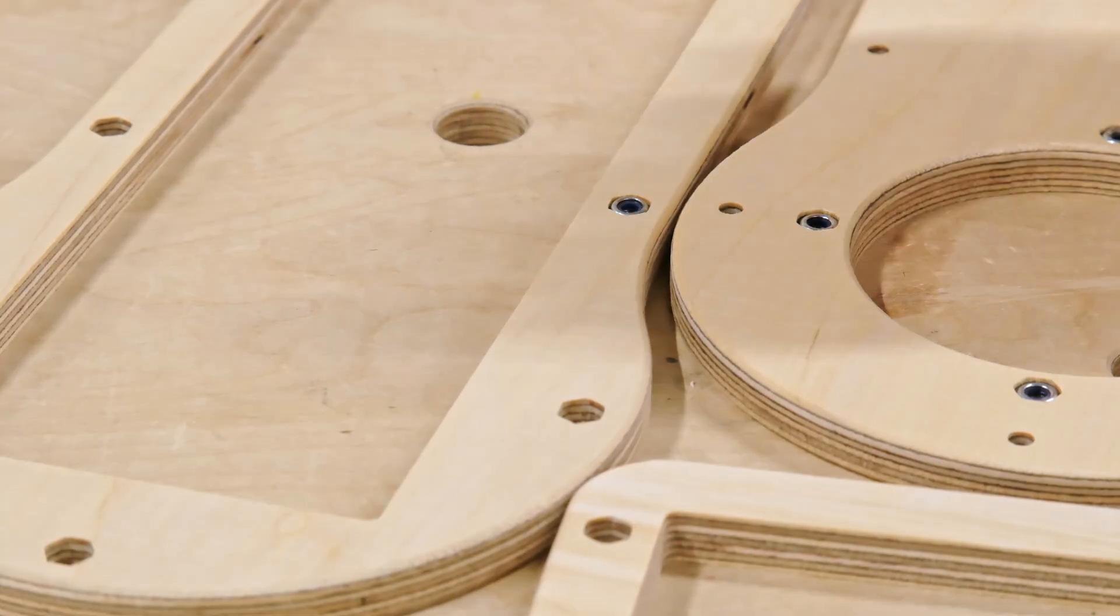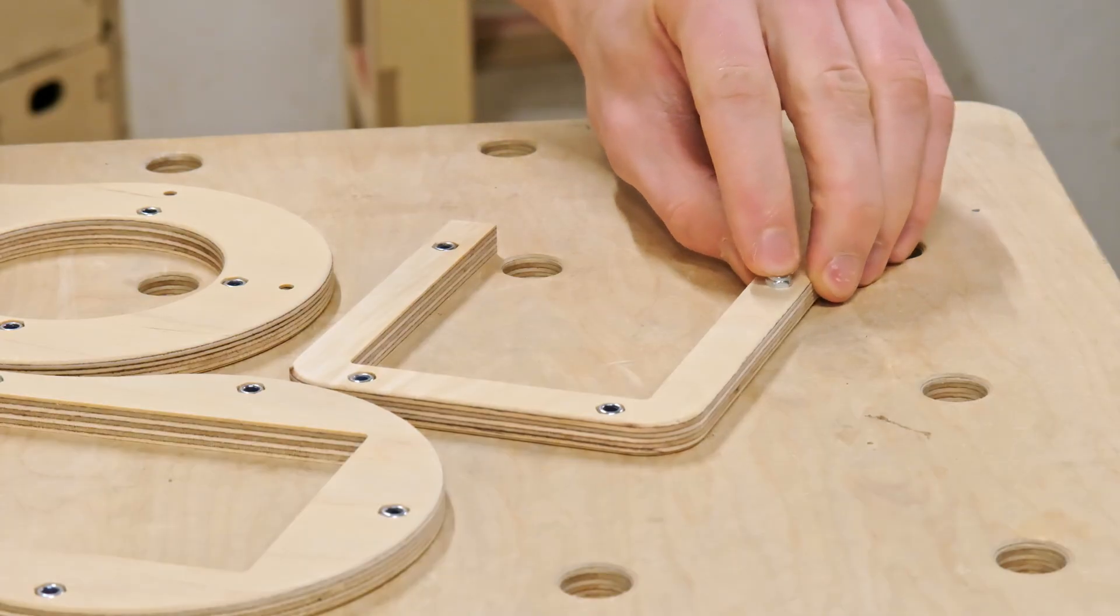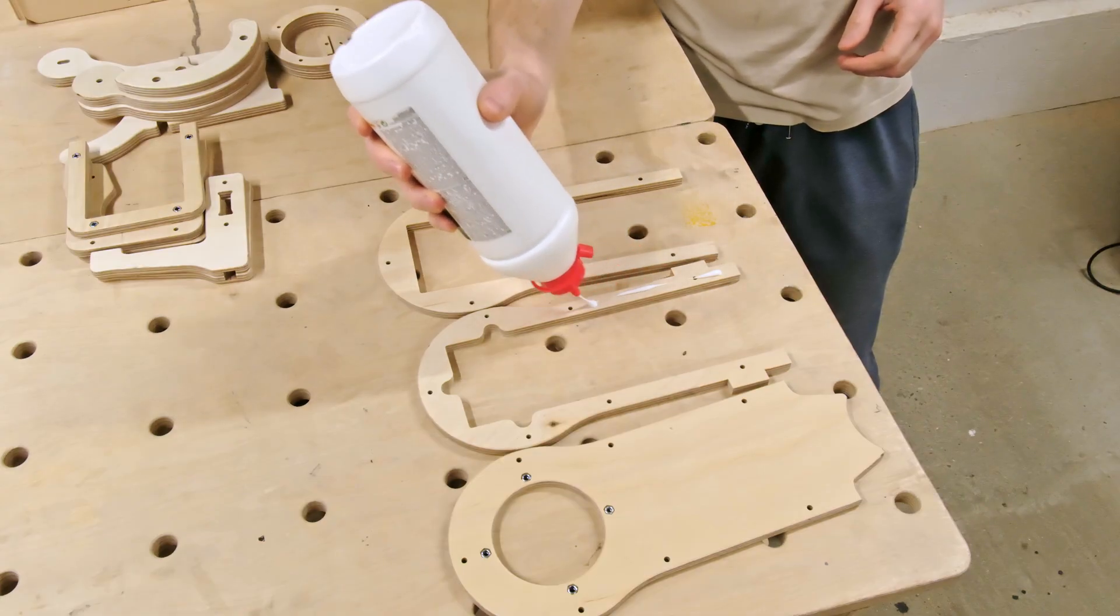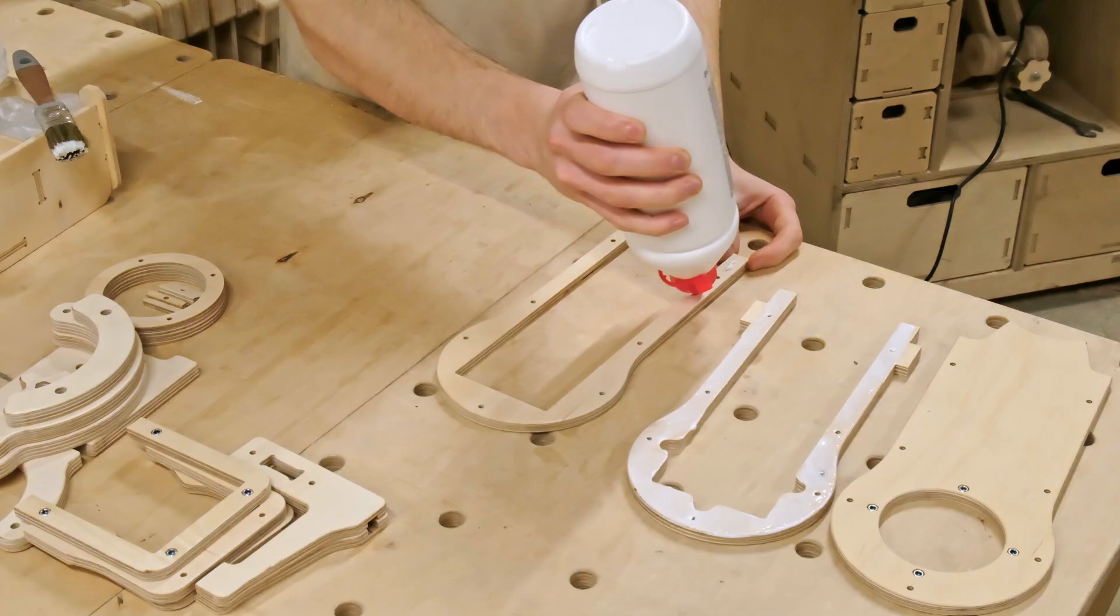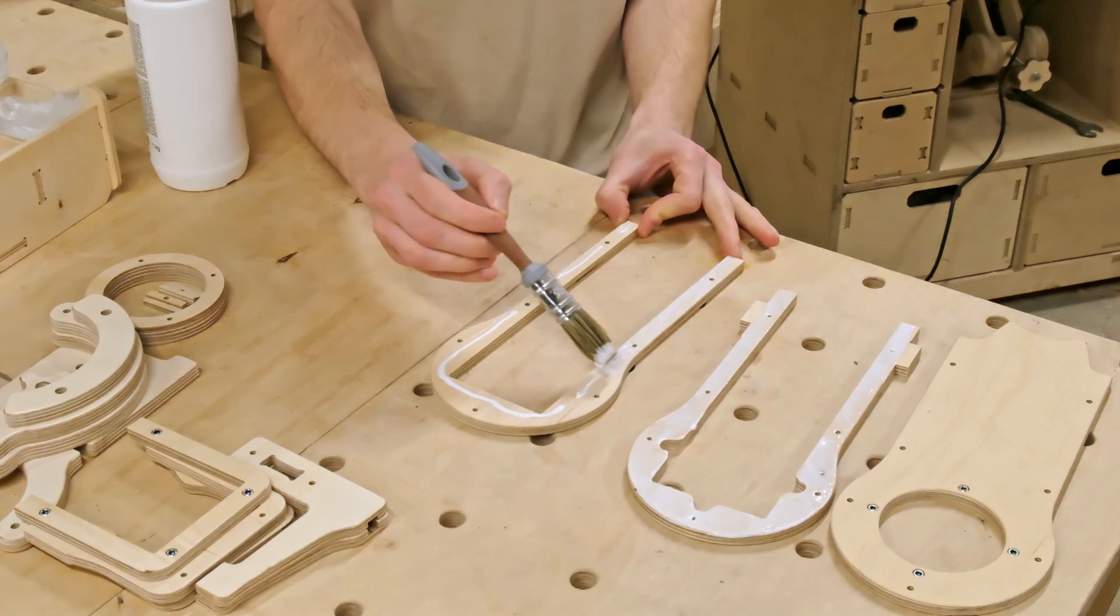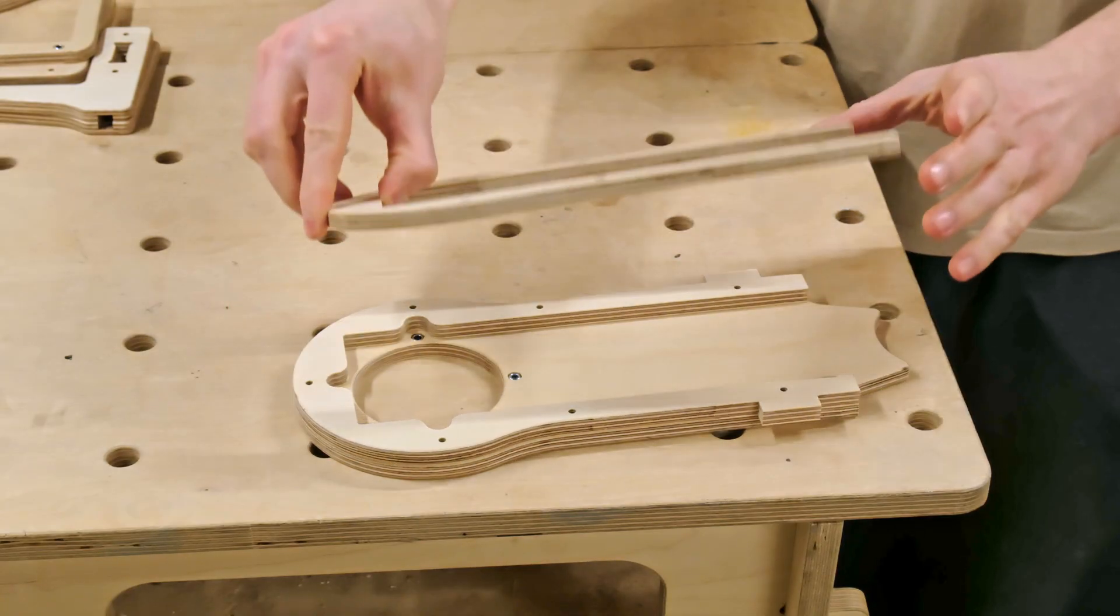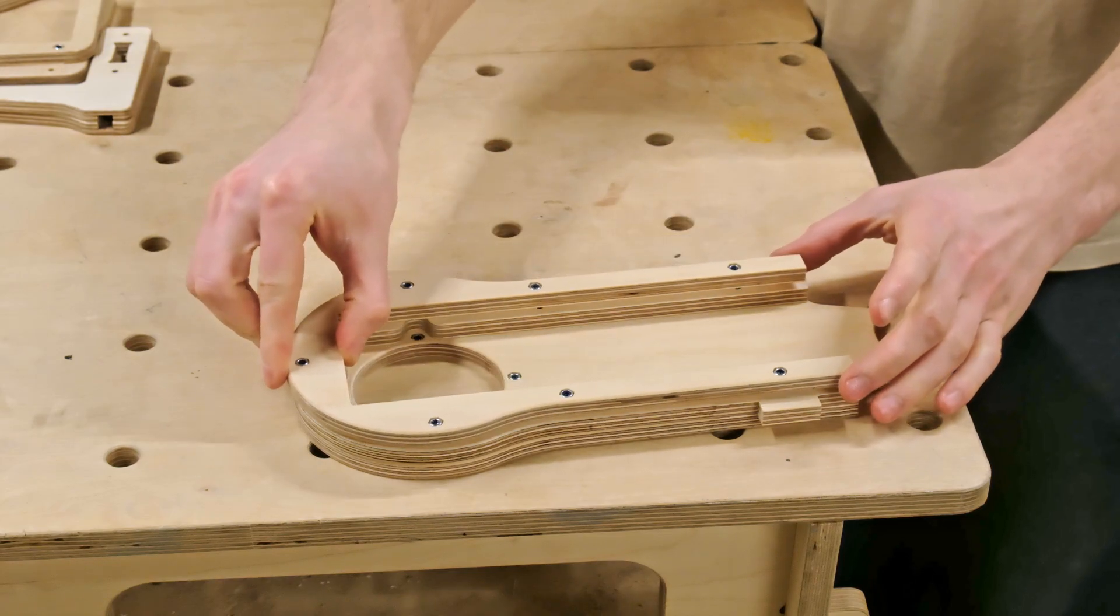After all the lock nuts are in place, it's time to spread out the parts of the large section of the dust shoe on the workbench and add a little bit of wood glue to the surfaces.